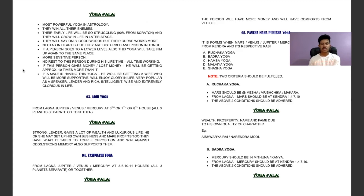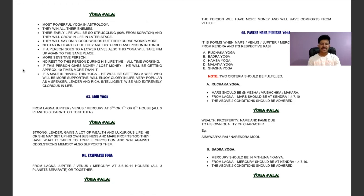If a male has Gajakeshara Yoga, he will get a very supportive wife and enjoy glory in life. The native is very popular as a speaker, leader, and is rich, intelligent, wise, and extremely glorious in life. Now coming to Adi Yoga: from the Lagna, Jupiter, Venus, and Mercury should be placed in the 6th, 7th, or 8th houses — all three planets separately together. Yoga phala: strong leader, gains a lot of wealth and a luxurious life, may set up their own business and earn profits.